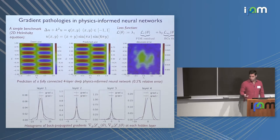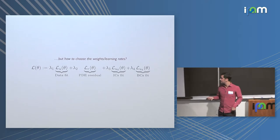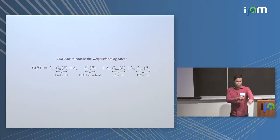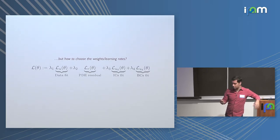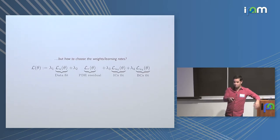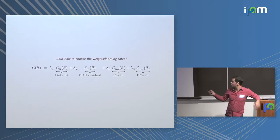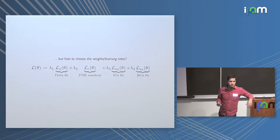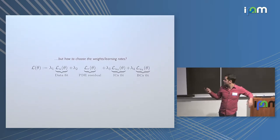The question is obviously how to choose those weights. There are three approaches: first, the graduate student descent method — you hire a graduate student, let them tweak things for a couple of weeks and maybe they come up with a magic choice. Second, you talk to an expert in hyperparameter tuning and meta-learning who writes a wrapper around your solver and performs an exhaustive hyperparameter search. The third approach — what I want to talk about today — is engineering a way to select those weights during training at runtime.